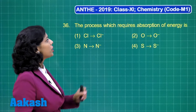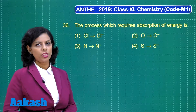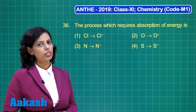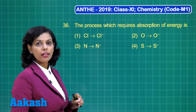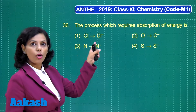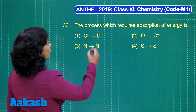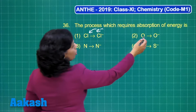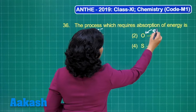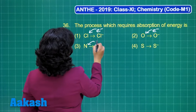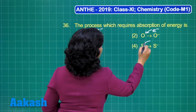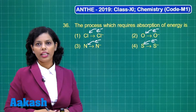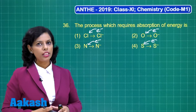Question number 36: identify the process which requires absorption of energy. The first process shows chlorine gaining an electron to form a Cl⁻ ion — this is an electron gain process. Similarly, in the second and third processes, electron gain is also occurring. So all of these processes are electron gain processes.